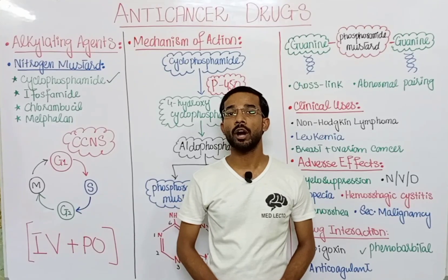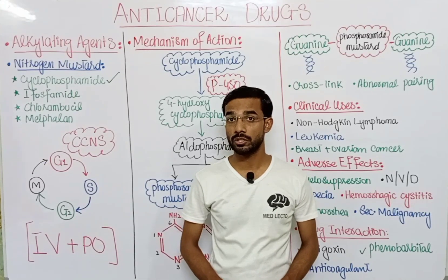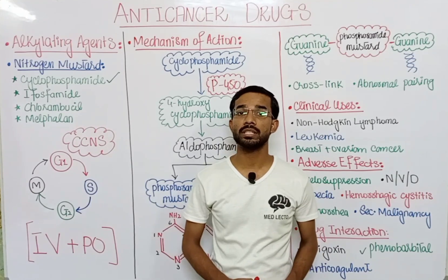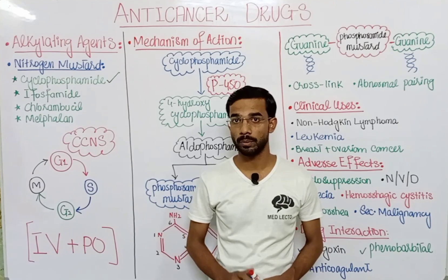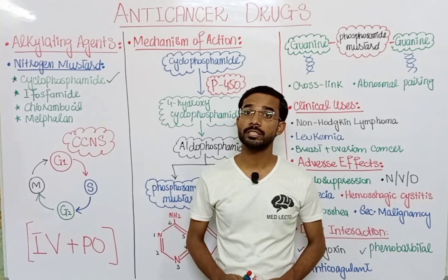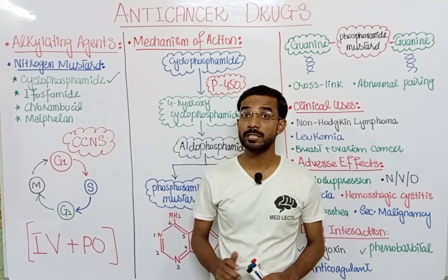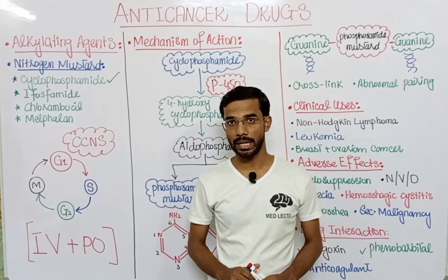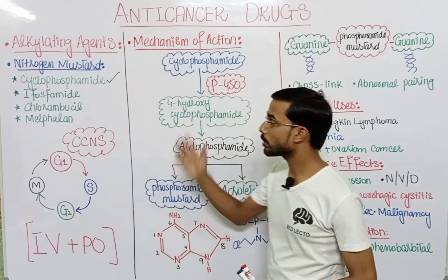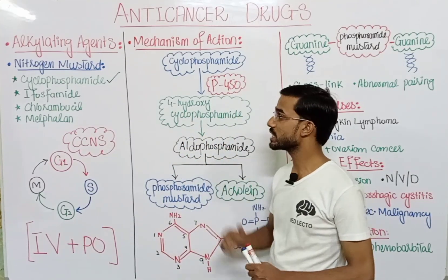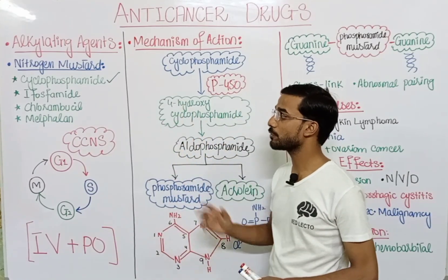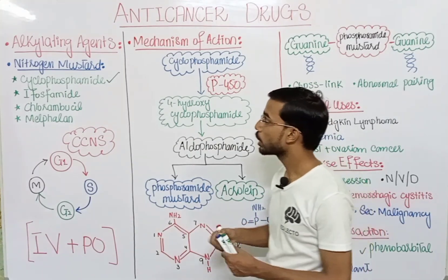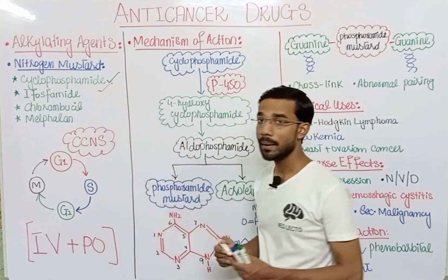Welcome to Medillacto. Today we are going to discuss anti-cancer drugs, specifically alkylating agents. In the previous lecture we discussed the anti-metabolites and antibiotic anti-tumor drugs, but now we are going to discuss alkylating agents, specifically nitrogen mustard alkylating agents. In the nitrogen mustard group you will see different drugs: cyclophosphamide, ifosfamide, chlorambucil, and melphalan, but in this lecture we will just focus on cyclophosphamide.